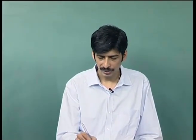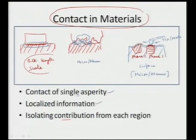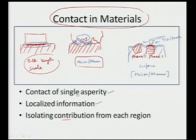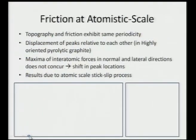Contact in materials is a very essential component. At bulk scale we assume flat, complete contact, but in reality at micron or nano length scales the asperities are not in contact. To extract localized information, we allow a tip or probe to scan through the surface, providing localized information isolated from the bulk.